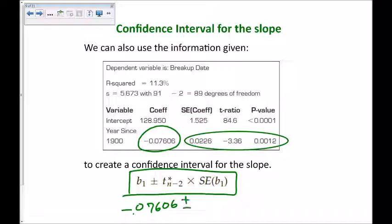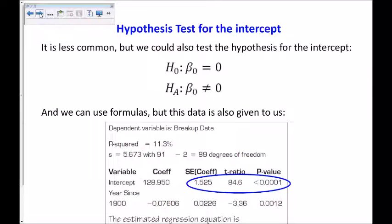So, we would take this value, negative 0.07606, plus or minus the t-star value, and that would be based on 98 degrees of freedom, and that could be, we'll confine that from our calculator, sorry, 89 degrees of freedom, times the standard error, which is given to us here. So, all these numbers are given to us, and we can find a confidence interval that the slope might be in. Again, an important question about that confidence interval is whether or not zero is in that interval.